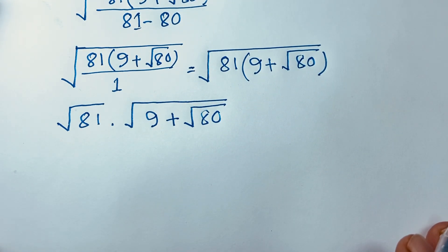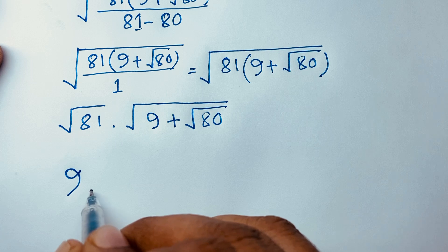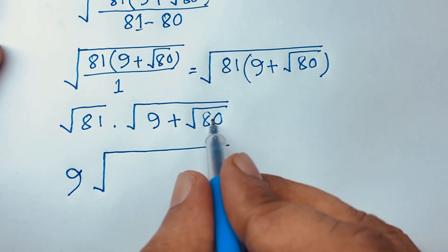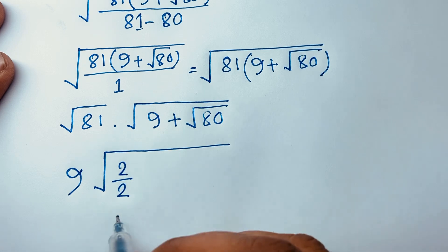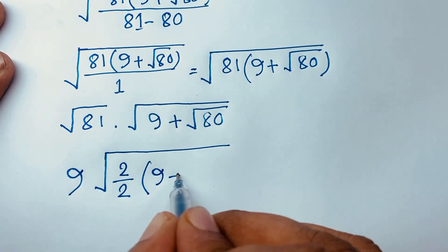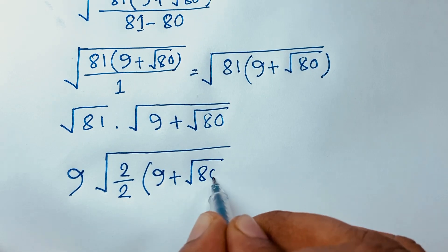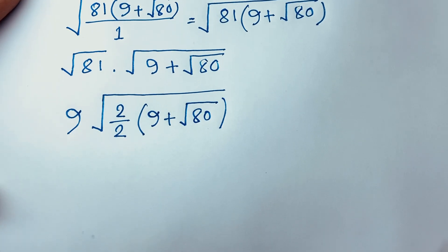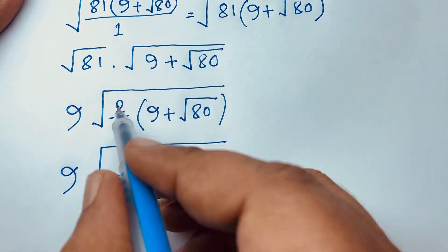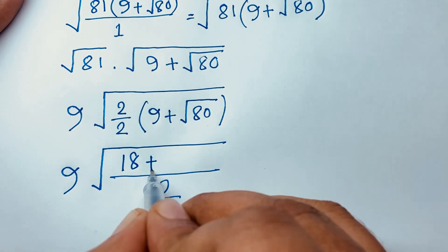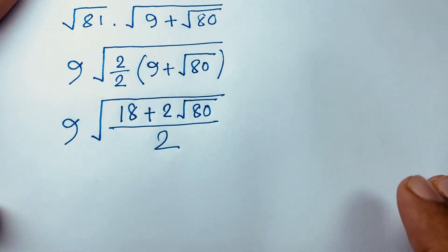Square root 81 equals 9, and here is square root of 9 plus square root 80. You can see it will be 2 over 2, which is 1. So we have 9 times (9 plus square root 80), giving us 9 times 2 equals 18, and 2 times square root 80.